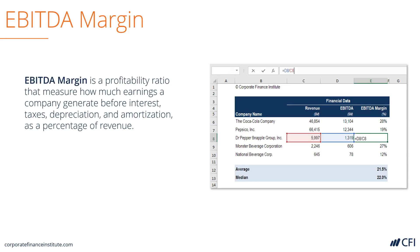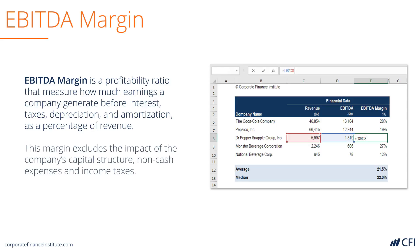EBITDA Margin is a profitability ratio that compares EBITDA to revenue as a percentage. It excludes a company's capital structure and backs out non-cash expenses as well as taxes, hence it makes for easy comparability across companies.